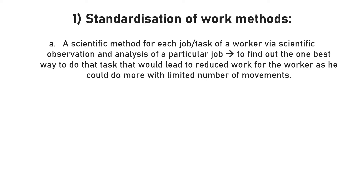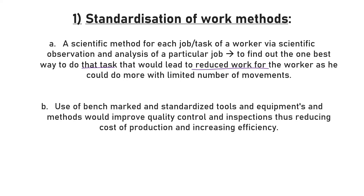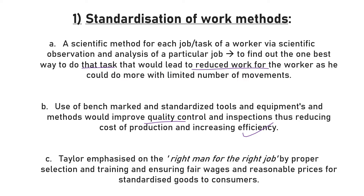The first principle is standardization of work methods — simply finding the best way to do a task that would reduce the worker's workload. This involves using benchmarks, standardized tools, and equipment to improve quality control, leading to reduced cost of production and increased efficiency. Taylor believed in the right man for the right job, meaning proper selection and training processes, and ensuring fair wages and reasonable prices for goods to consumers.